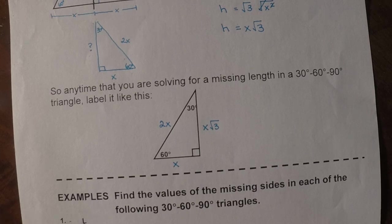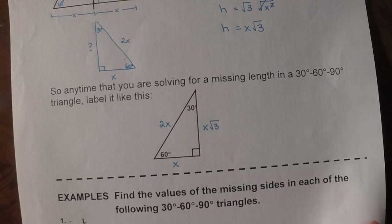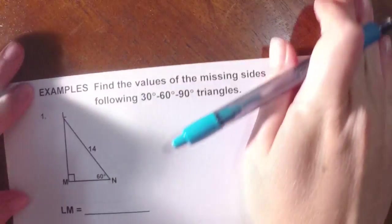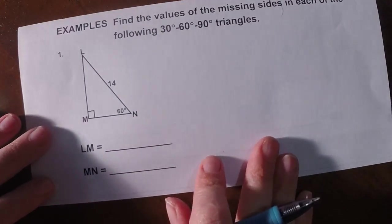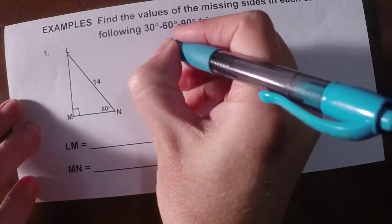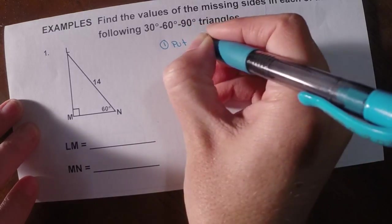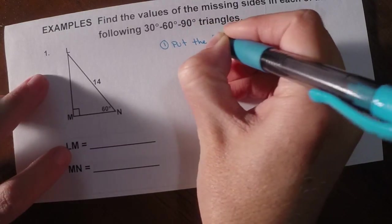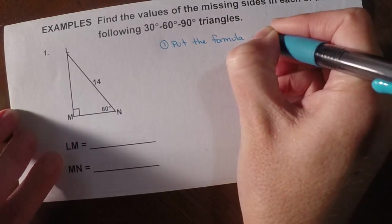So now we're going to follow the same steps that we used for the 45-45-90 triangles, and we're going to apply it to 30-60-90 triangles. So if you remember correctly, we had you do it in three steps. The first thing that we always had you do was put the formula on the triangle so you could see what parts you know and what parts you don't know. So if this is our example, again, the first step is going to be to put the formula on the triangle.